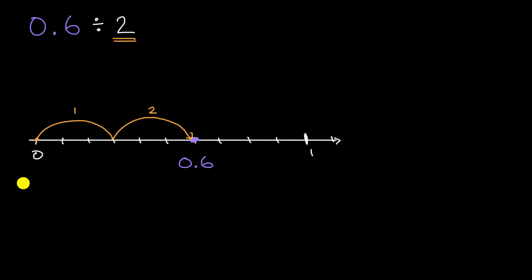And so one way to think about it is, we've divided 6 tenths into two jumps, and each of those jumps are how far? Well, each of those jumps are 1, 2, 3 tenths.